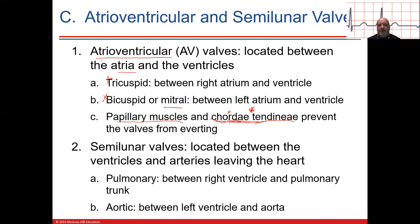Everting is like what happens to an umbrella on a windy day when it goes inside out. That could happen to a valve — it could evert and go the opposite direction into the atria. The chordae tendineae prevent that from happening.